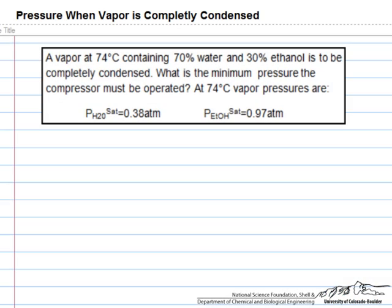This example shows how to calculate the operating pressure of a condenser that just condenses all of the vapor. In this example we have a vapor that has 70% water and 30% ethanol and we have to turn it completely into a liquid.